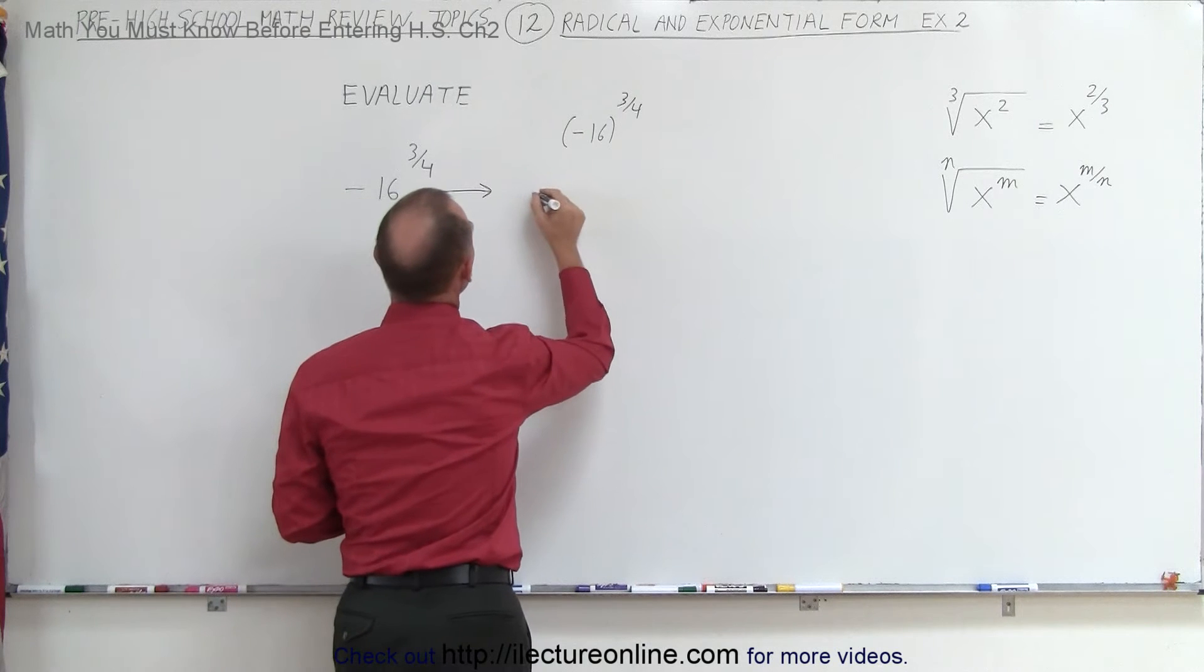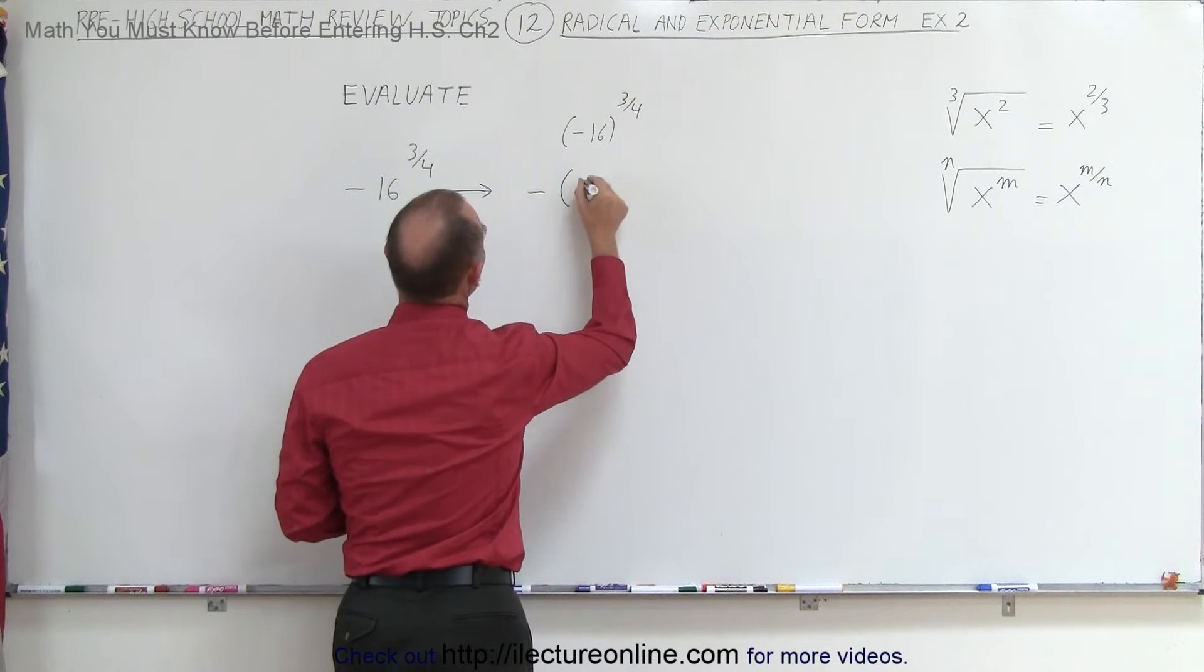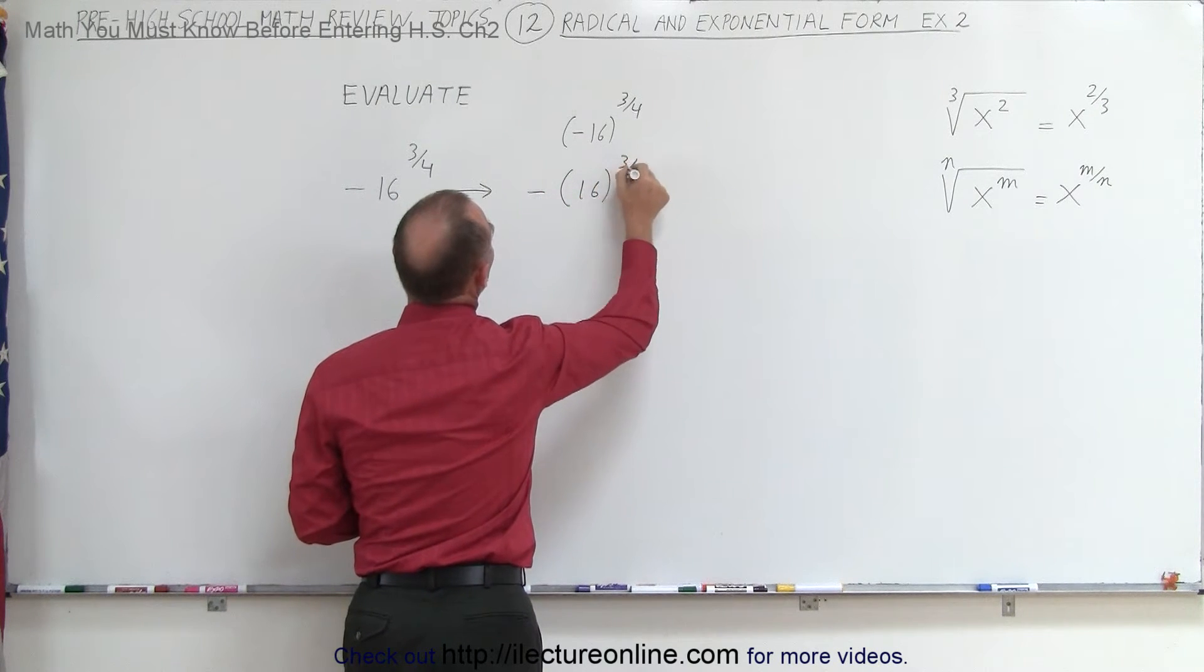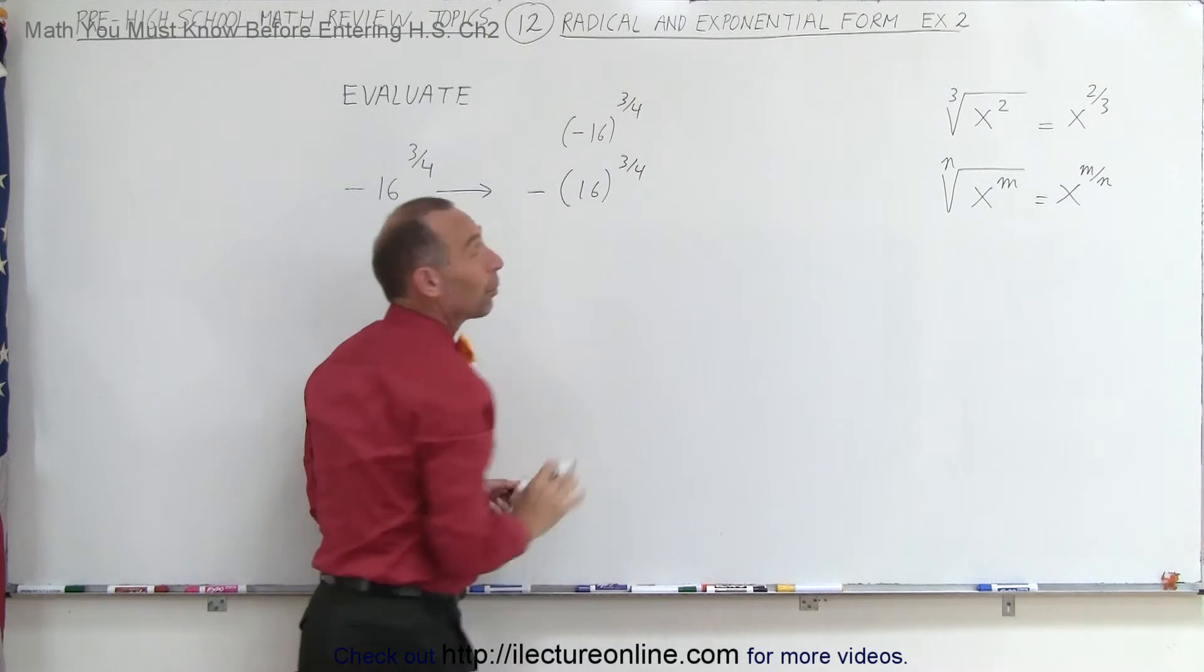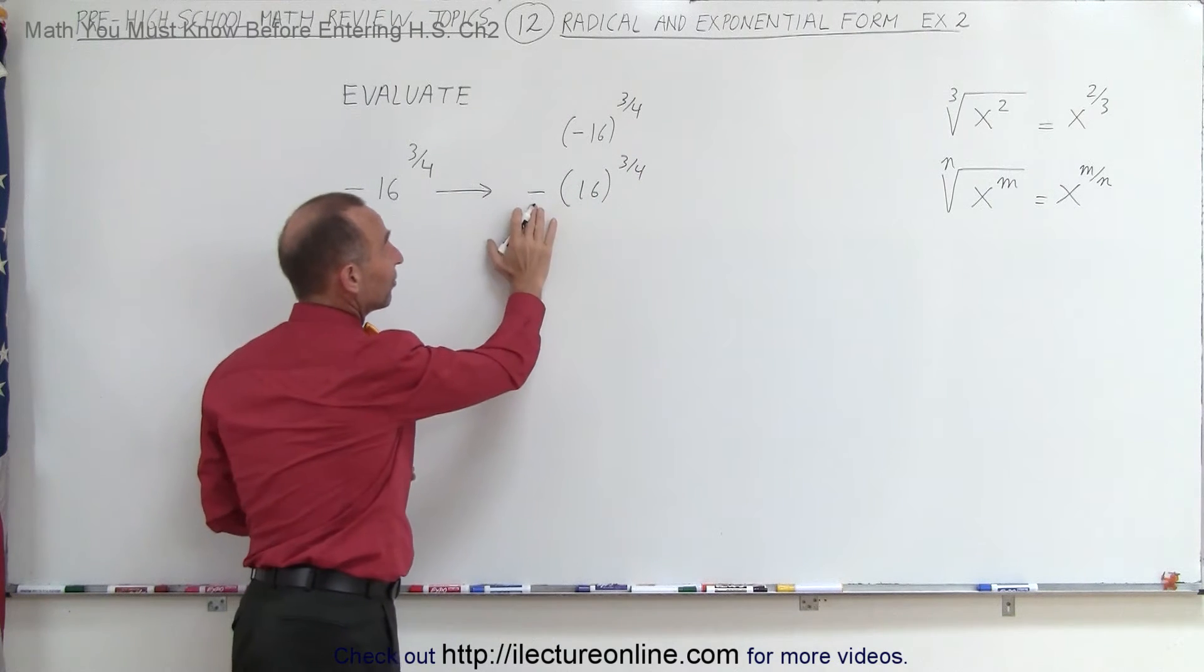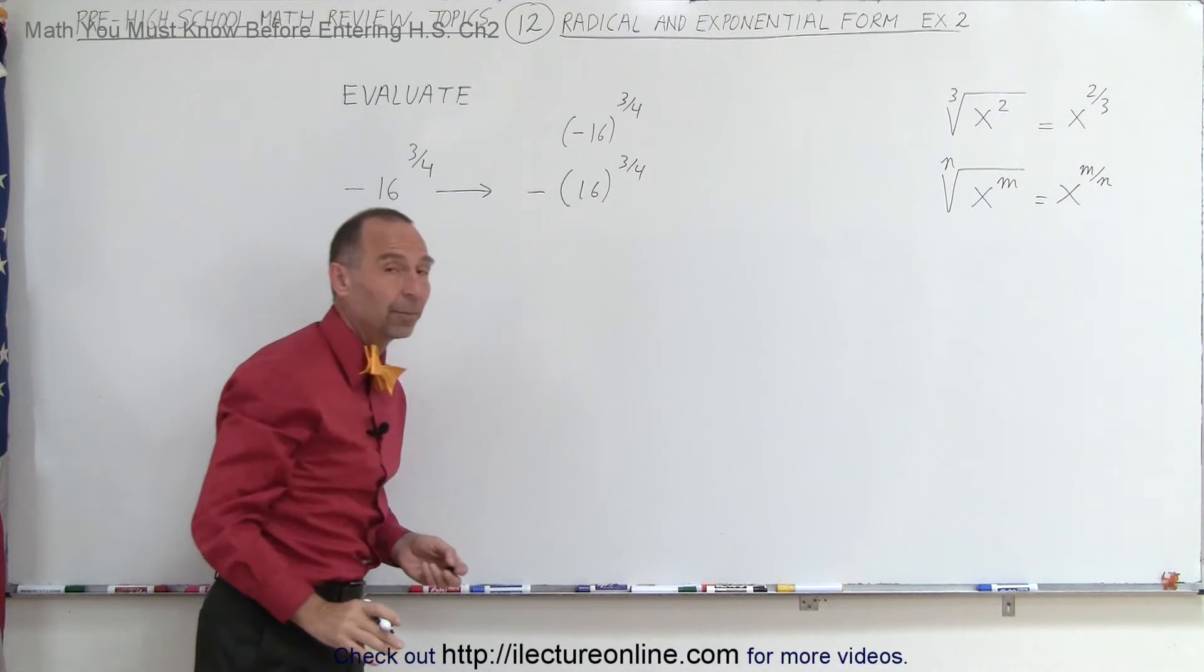In other words, this is the same as writing minus the quantity 16 raised to the 3 fourths power. Here it's actually a little bit more clear that the exponent does not affect the negative sign, only the number inside the parentheses.